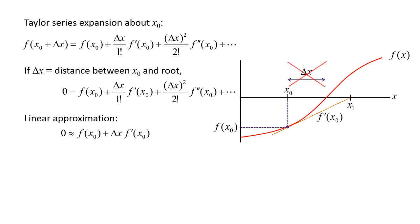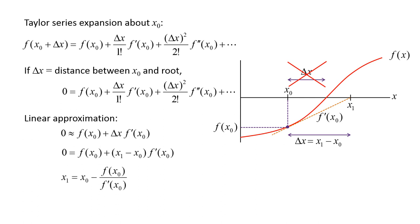So delta x is no longer the distance between x0 and the actual root, but rather the distance between x0 and the root estimate x1. We replace delta x with x1 minus x0 in the Taylor series approximation and solve for x1, which is now the new root estimate. x1 equals x0 minus f evaluated at x0 divided by f' evaluated at x0.